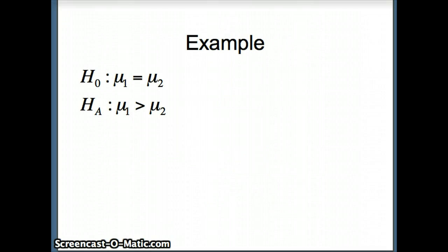So here's an example. We have H₀: μ₁ equals μ₂ versus Hₐ: μ₁ is greater than μ₂. So of course, if we use the other version, it would be μ₁ minus μ₂ equals 0, versus μ₁ minus μ₂ is greater than 0.